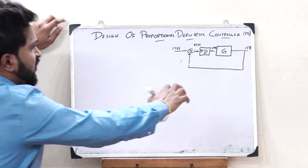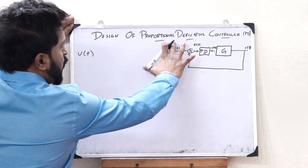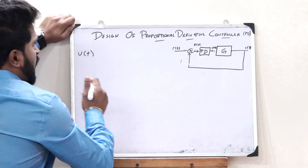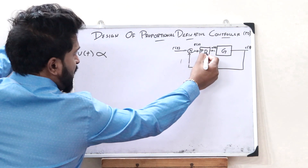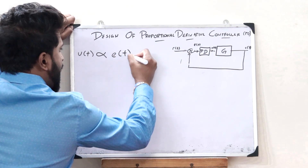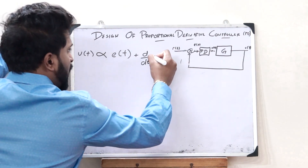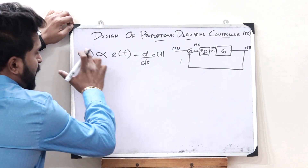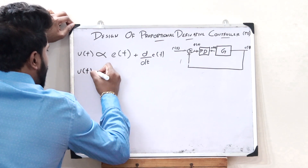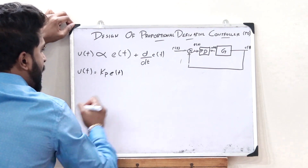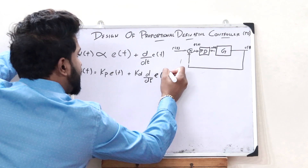This particular error signal E of T goes into this particular proportional derivative controller and from this PD controller, we will get an output signal U of T. Now, U of T — just like the name suggests — is proportional to something related to a derivative. This particular output signal U of T is proportional to the input E of T, plus it is also proportional to the derivative D by DT of this particular input signal E of T. In order to remove the proportional sign and make it an equals sign, we add proportionality constants, giving us U of T = Kp·E(T) + Kd·(d/dt)·E(T).